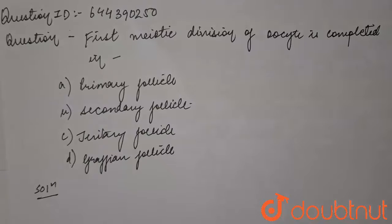question: First meiotic division of oocyte is completed in (a) primary follicle, (b) secondary follicle, (c) tertiary follicle, and (d) Graafian follicle.